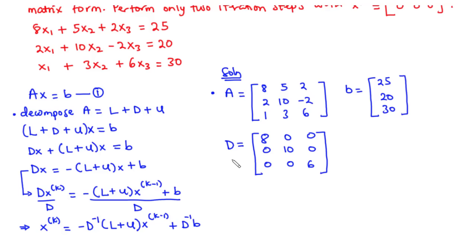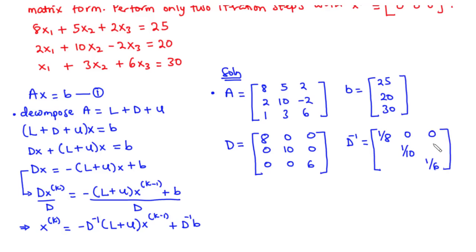Next, we find D inverse. For a diagonal matrix, D inverse is obtained by replacing the diagonal elements with their reciprocals. So reciprocal of 8 is 1/8, reciprocal of 10 is 1/10, and reciprocal of 6 is 1/6. The rest of the elements remain zeros. Note that for the inverse of D to exist, all main diagonal elements must be non-zero — if even one is zero, the inverse fails to exist.